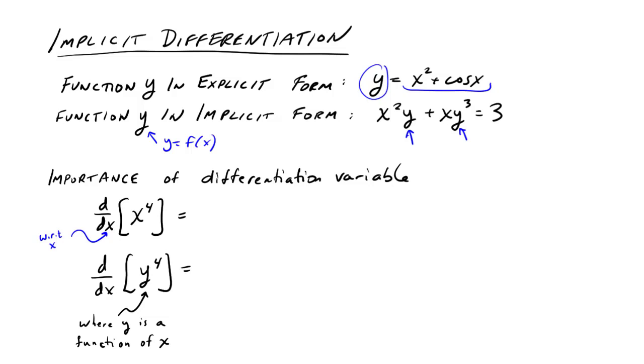If I'm doing the derivative with respect to x of x to the fourth, that's just our usual 4x³. But if I'm doing the derivative with respect to x of y to the fourth, and y is a function of x, then essentially what I have is a chain rule situation.